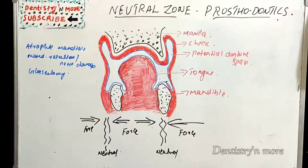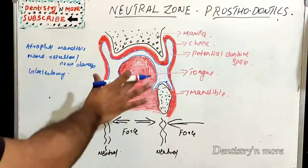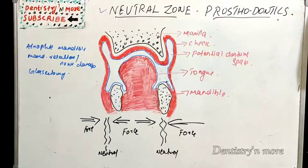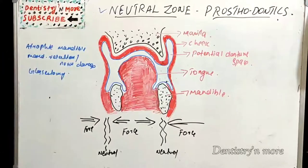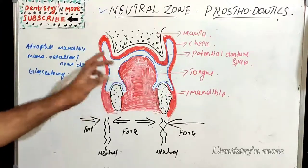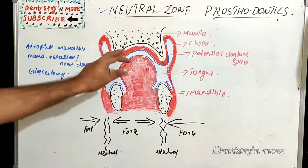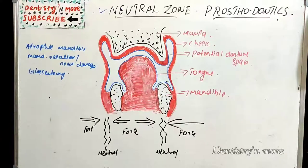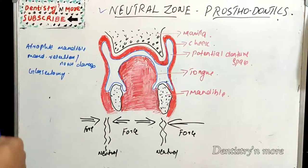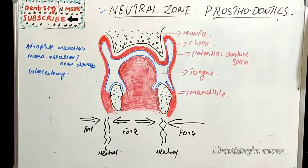That is the concept of the neutral zone, where muscular action is neutral. The concept is simple: the neutral zone is where the forces from outside and inside are balanced, and where we should keep our dentures for better retention and stability. This is commonly asked as a short note, and you can also incorporate it into a long essay if asked as a complete concept. I'll come up with a new topic in prosthodontics — thank you.